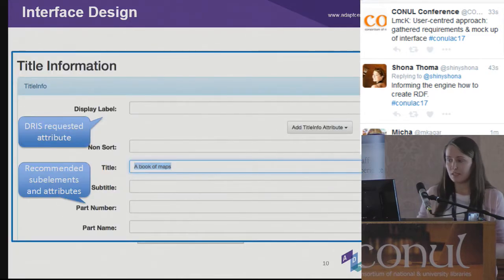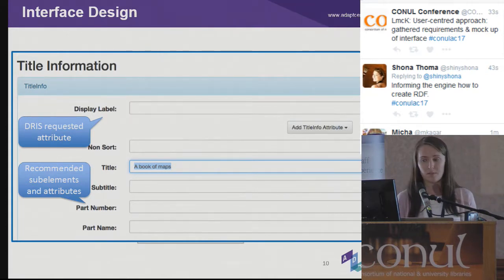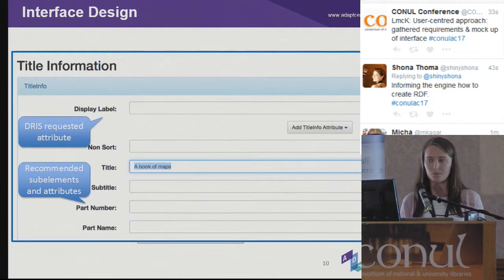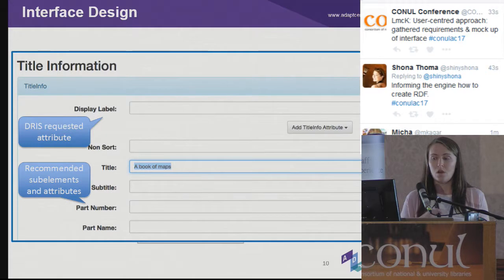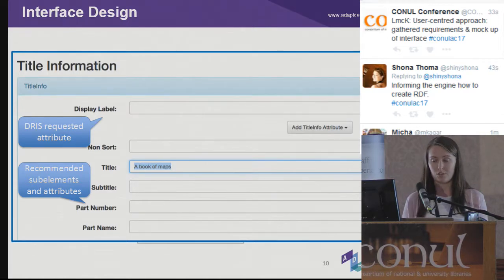Once you complete that initial step, the interface opens up to reveal the recommended sub-elements and attributes. As this was a bespoke tool for DRIS, there were some elements that weren't necessarily recommended but were optional, and that they wanted visible on the initial view as well. In this case, that would be the attribute of display label, which allows you to provide extra information around the elements you're using.